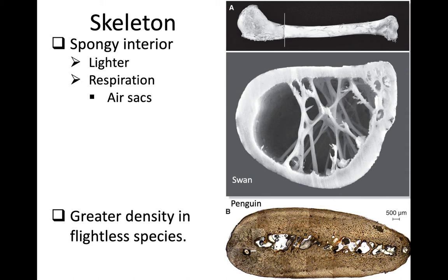That serves two purposes: it makes the bones lighter, but also it allows for the extension of the respiratory system through a series of what are called air sacs. Unfortunately, it also means that the bones are going to be a little bit more brittle, more likely to break, and if they do break and it messes up the integrity of the air sacs, that's one of the ways that a bird can die from something like a window strike.